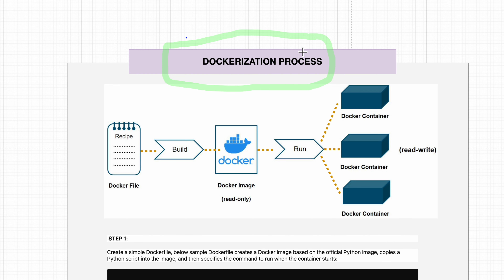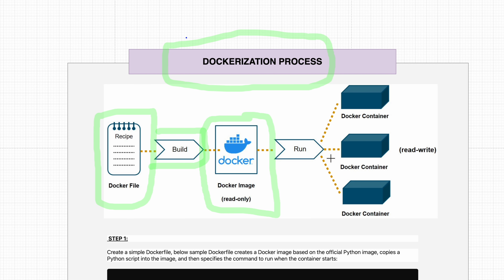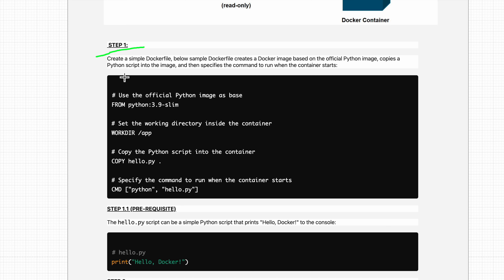So what is the process of dockerization — how do you create Docker images? First, you need a Dockerfile. Then you build the Docker image by executing the docker build command, which gives you a Docker image. Then when you run docker run, you have a Docker container running. You can have multiple Docker containers running from the same Docker image.